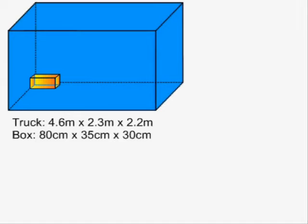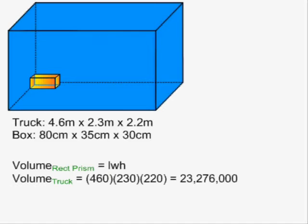There are two ways to solve this type of problem. One way is using formulas. The volume formula for a rectangular prism is length times width times height. If we fill in this formula with the dimensions of the truck, we get 460 times 230 times 220, and the answer is 23,276,000 cubic centimeters.